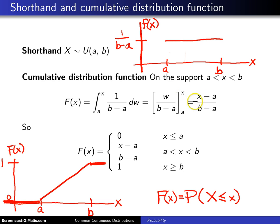When you plug in x, you get x over b minus a. When you plug in a, you get a over b minus a. And you wind up with this as a cumulative distribution function on the support a is less than x is less than b.